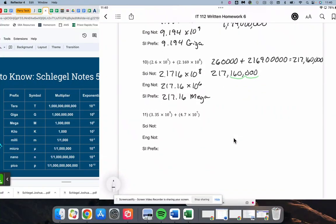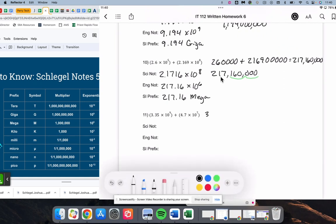And for number 11, we have another addition one, so you better write them out. 3.3, no decimal, Schlegel. 3, 3, 5, that's two decimal places, so I need 7 more.